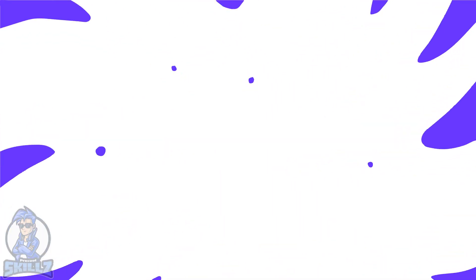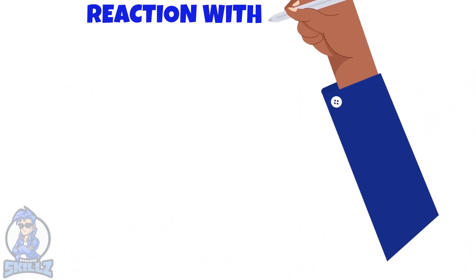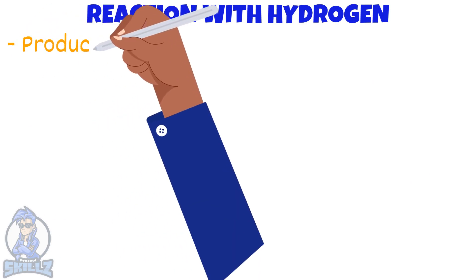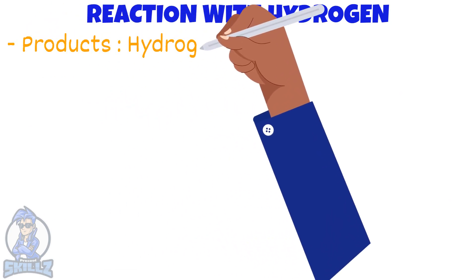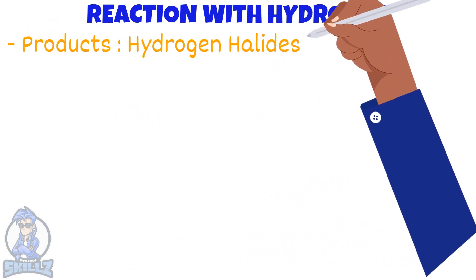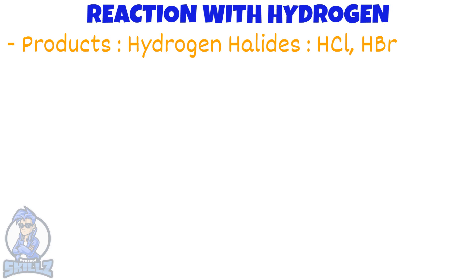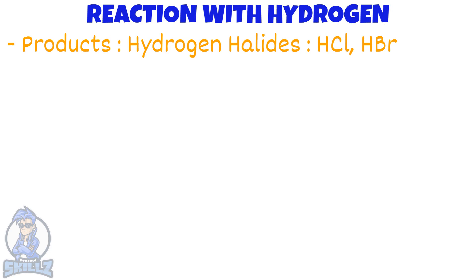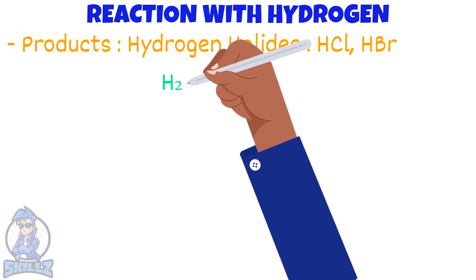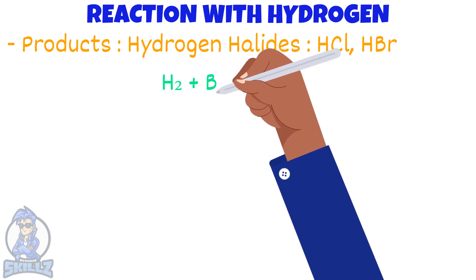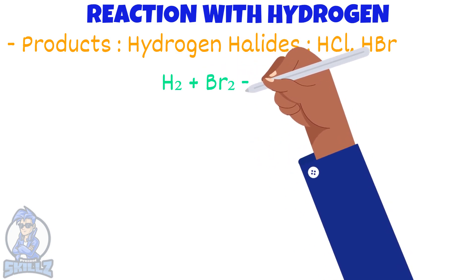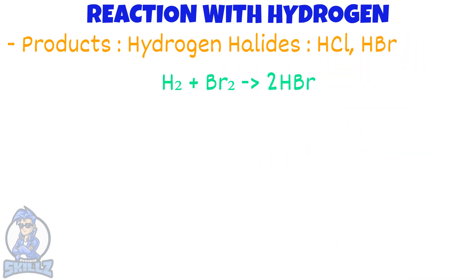When hydrogen reacts with the halogens the product would be a hydrogen halide, like hydrogen chloride or hydrogen bromide. An example equation would be: hydrogen plus bromine → hydrogen bromide.